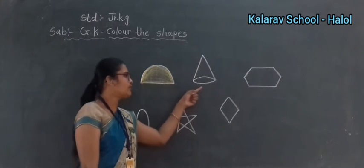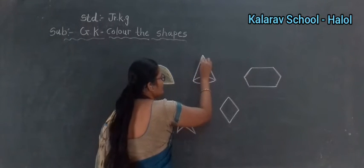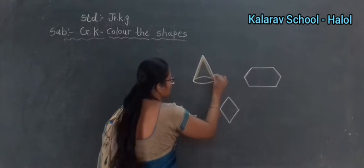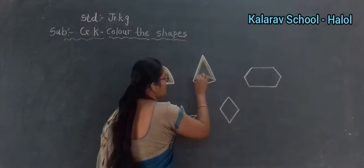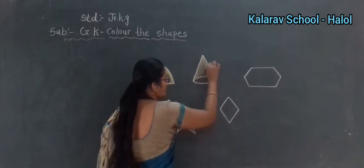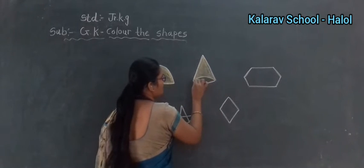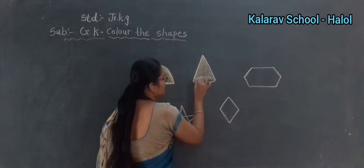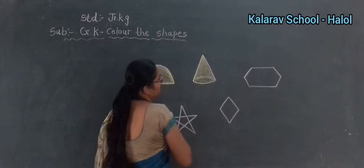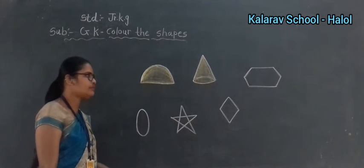Now, cone. Which shape is this? Cone. Take another color and fill here. You can take whichever color you like. Which shape is this? Cone. Complete? Good.